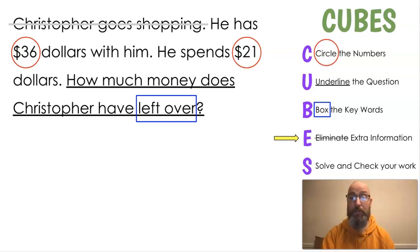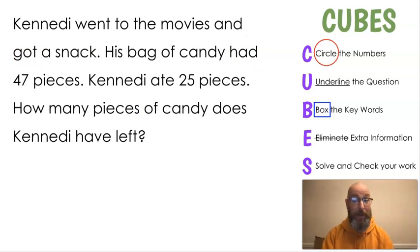Here's the question. We're going to go all the way through on this one. Are you ready? Here's our equation. Our word problem, I mean. Kennedy went to the movies and got a snack. His bag of candy had 47 pieces. That should have been her. Bag of candy had 47 pieces. Kennedy ate 25 pieces. How many pieces of candy does Kennedy have left?